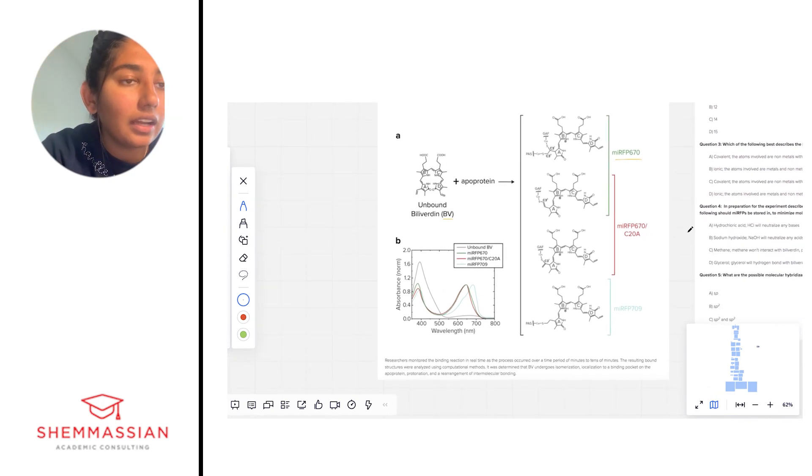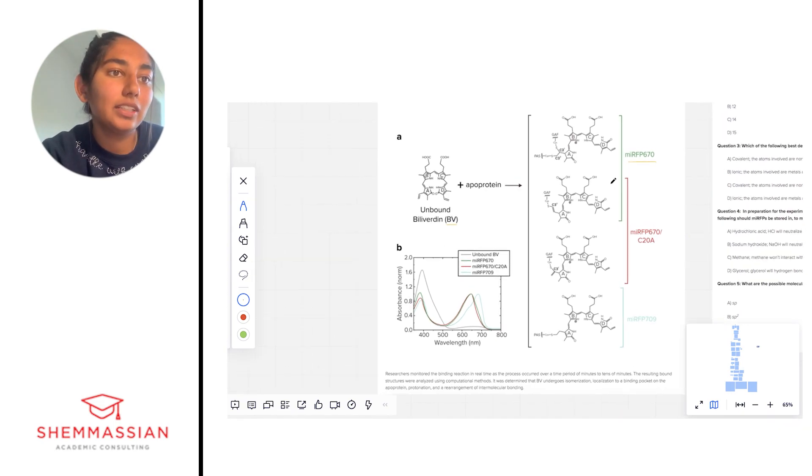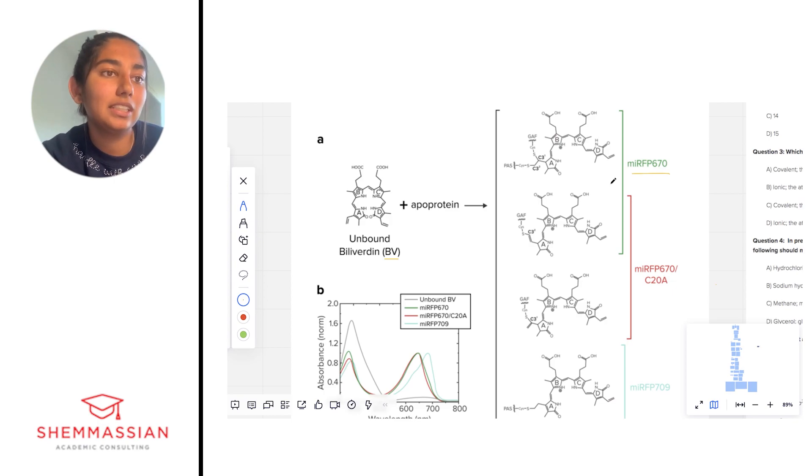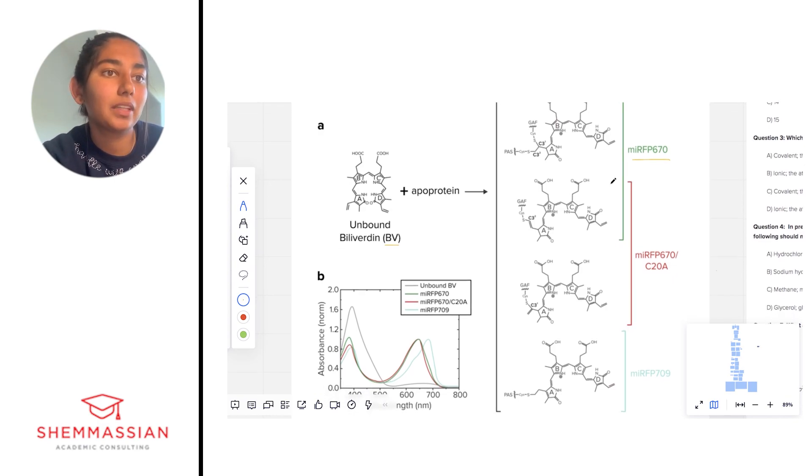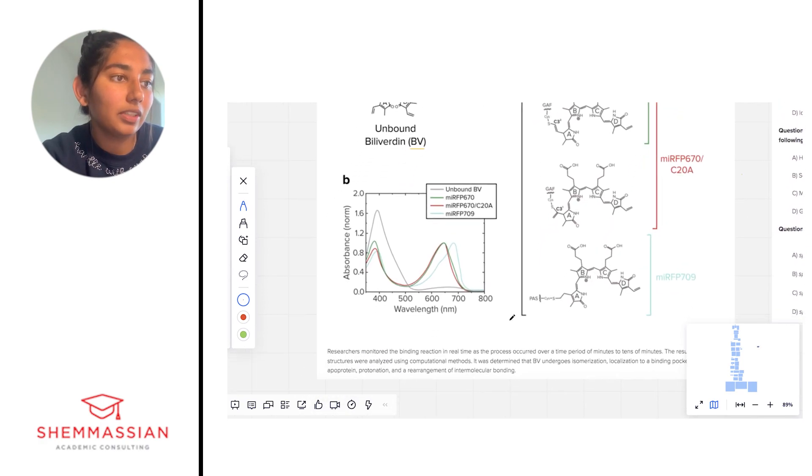We can notice some key features of these structures, some functional groups. We see aromatic rings again, carbonyls, amides, that kind of thing. If we're looking at Figure B, we see some kind of spectra where we are plotting absorption of these different compounds. We have unbound BV and then the introduction of these different MIRFPs, and the structures of those are on the side.